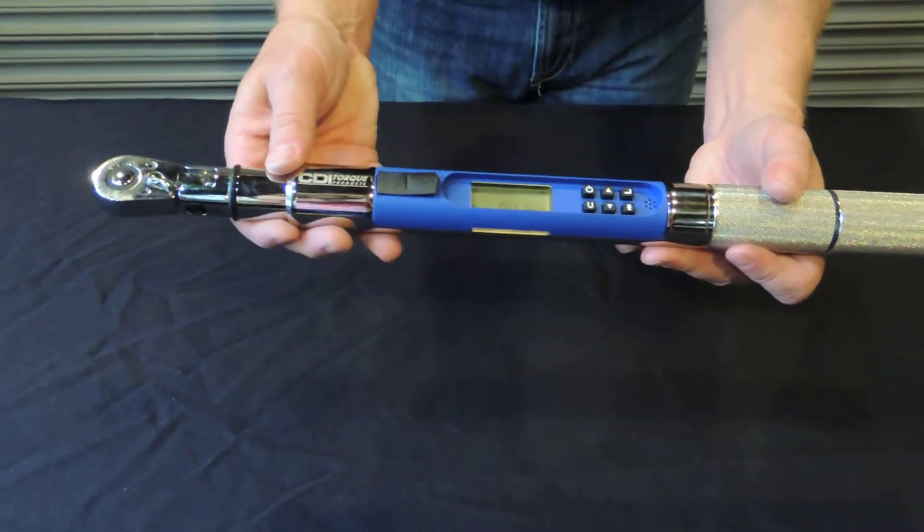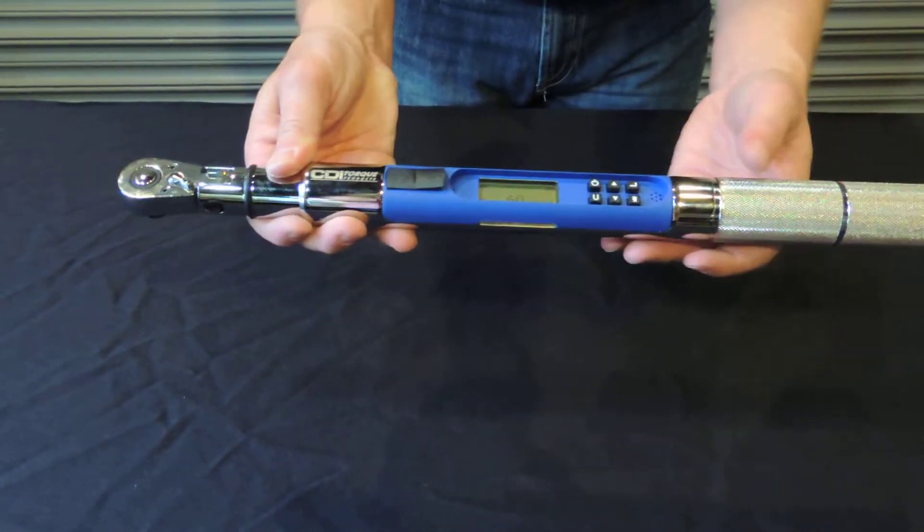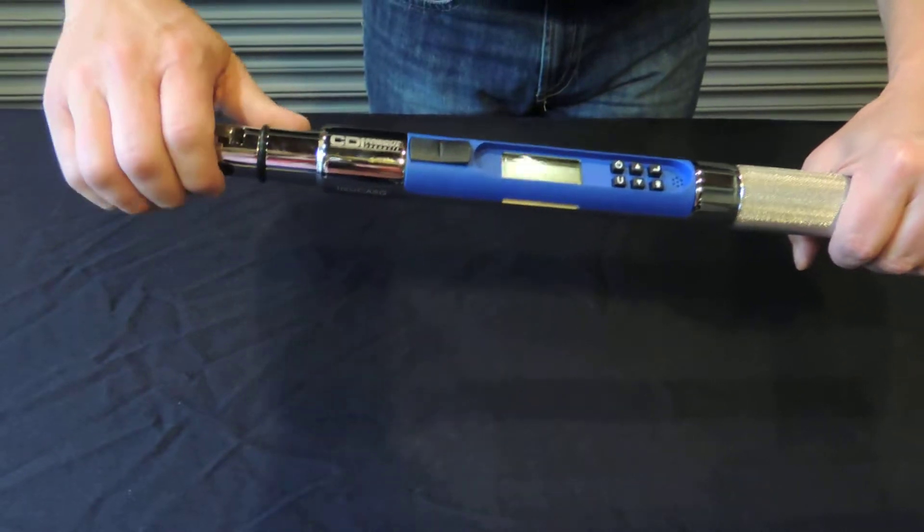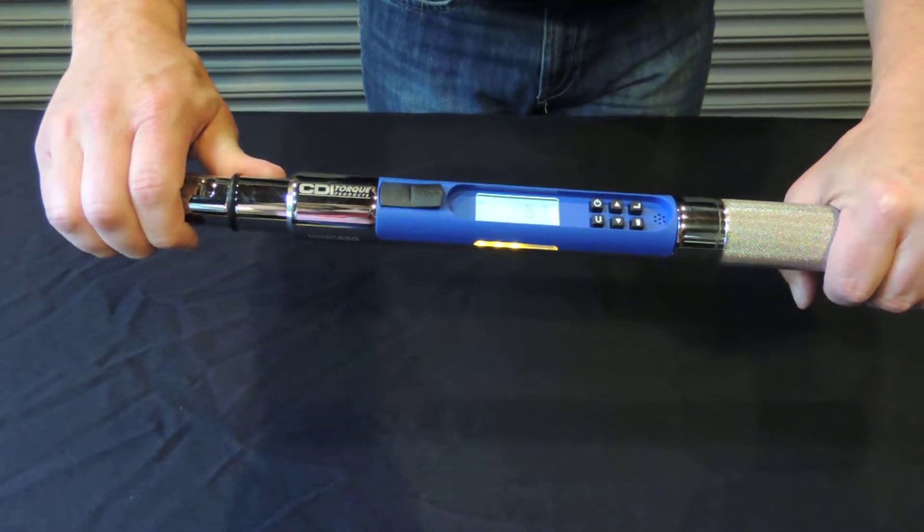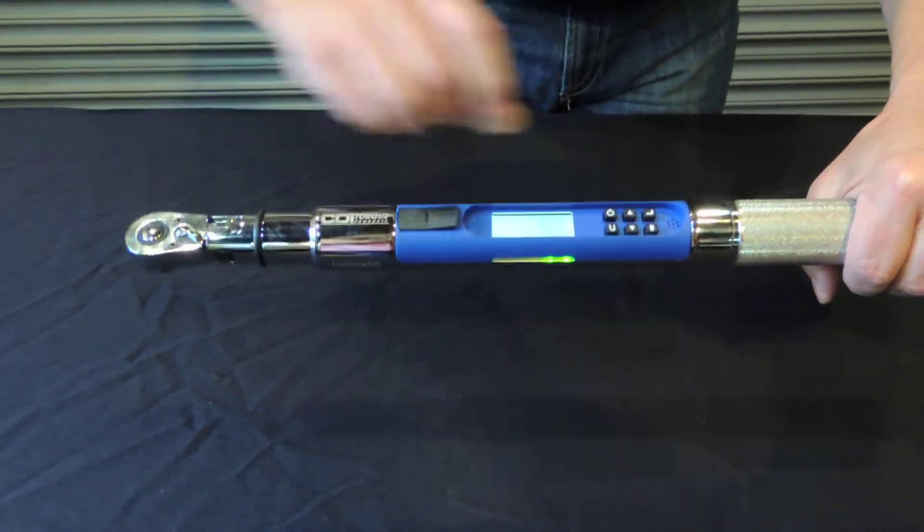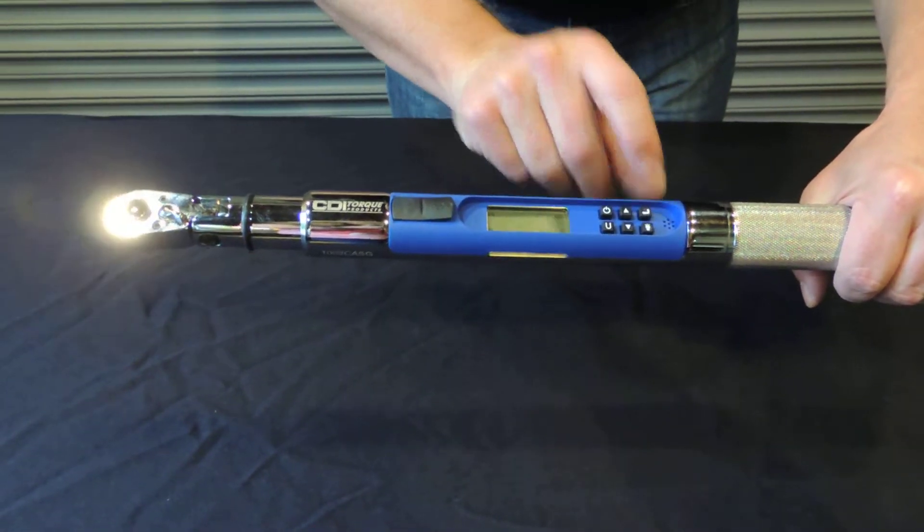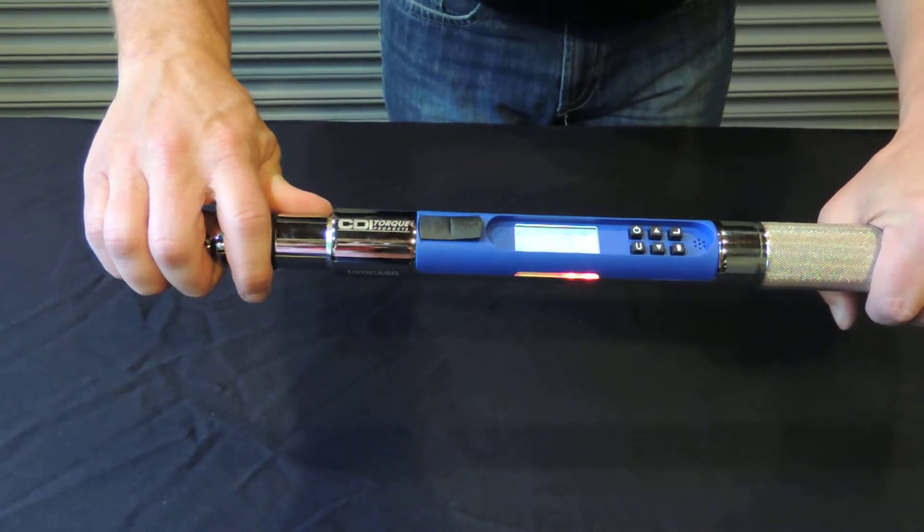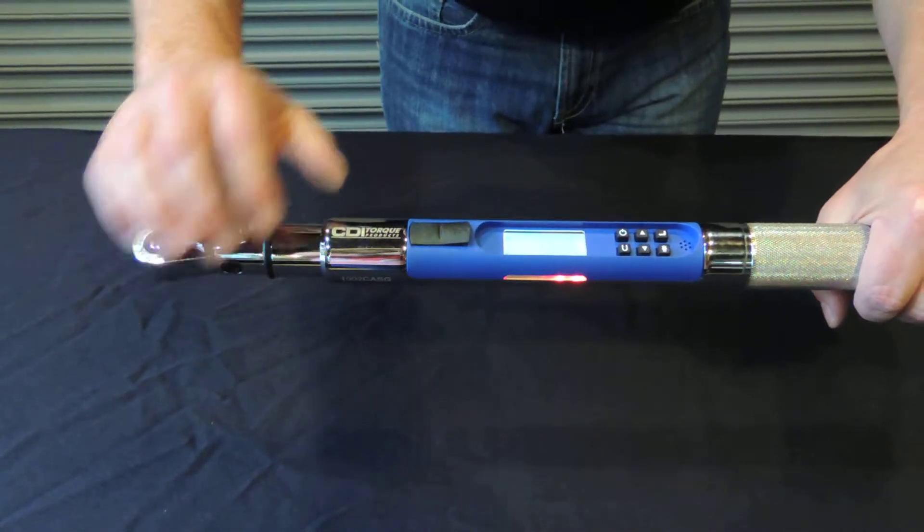It's got a sturdy body construction, a steel grip, and the beauty of this tool is as you're torquing, it shows you that you've reached your torque level. You get a green light if you've torqued it to the right level. If you over torque, it alerts and shows you the red light.